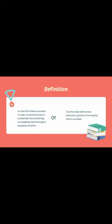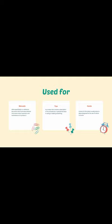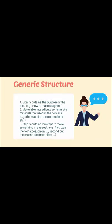Or you can say, Procedure Text is a text that deals with human behavior, for example, how to live happily, how to succeed, and so on. So it must be in sequence. Procedure Text is usually used for writing manuals, just like information about operation and also maintenance of a product, tips, and also a guidebook.